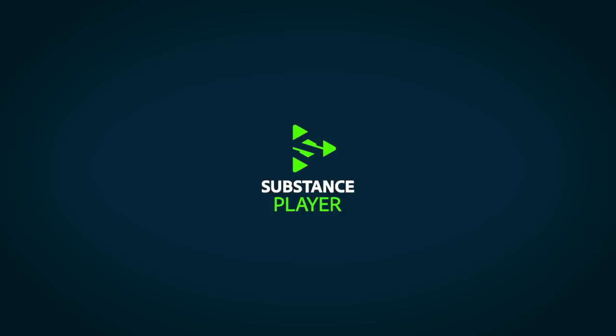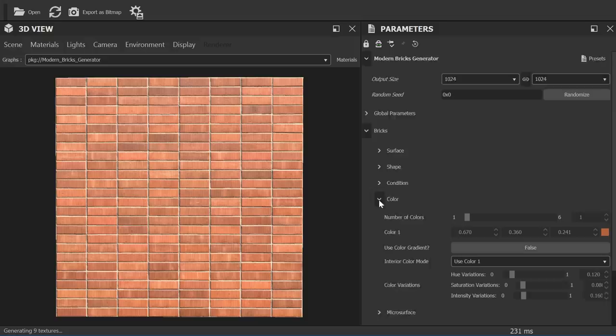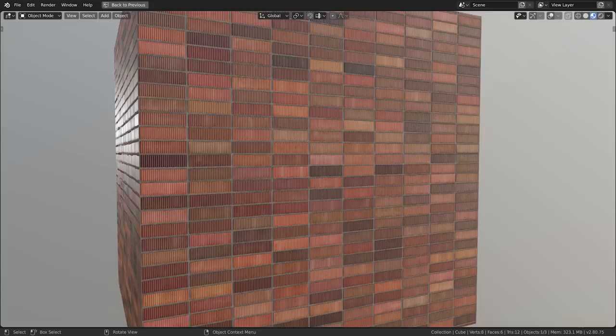You just open the generator file and on the right hand side you'll see dead simple controls for changing the appearance. Once you've got it the way you like it, you just hit export and then you can use those maps in any software like you would normally.